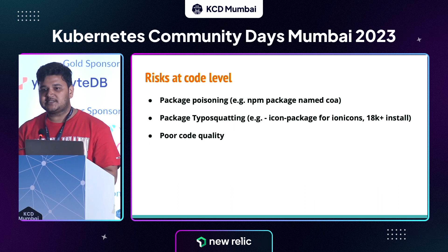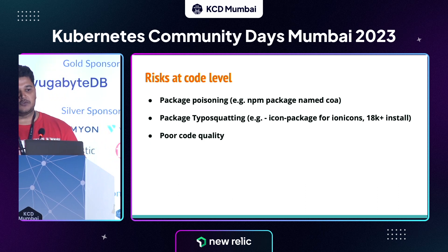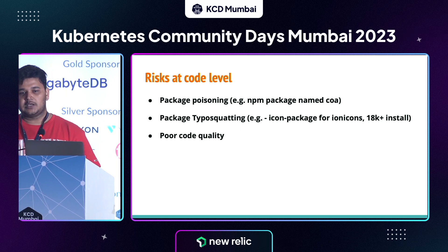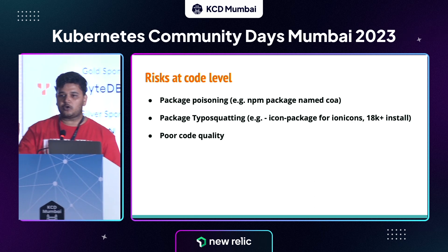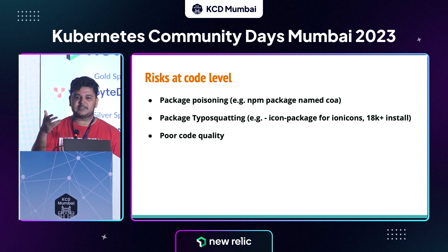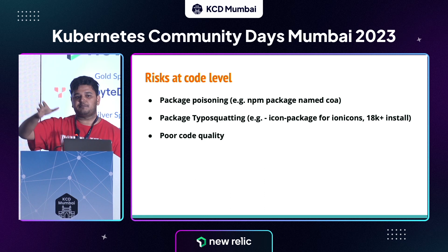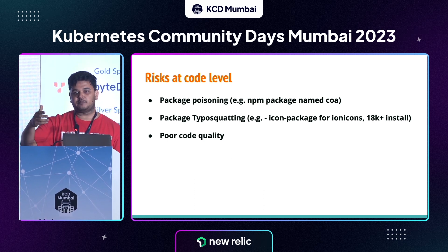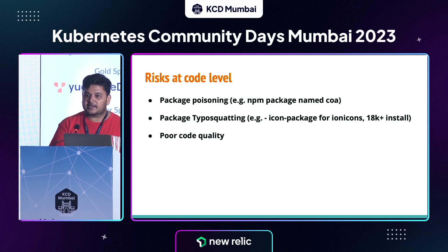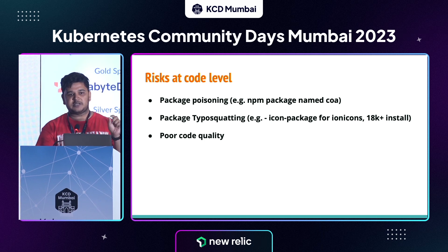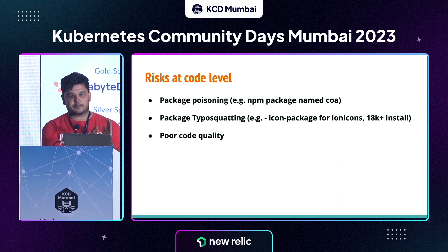Another kind of attack at the package level is package typo squatting. Typo squatting is traditionally associated with domain names — attackers purchase domain names that are common misspellings of popular domains. Something similar is now happening with NPM and Python packages: attackers create packages that look very similar to legitimate ones with common spelling changes, then use bots to put reviews and ratings so the package appears legitimate. If developers are not careful, they end up using the wrong ones.